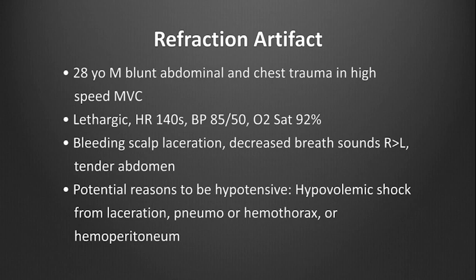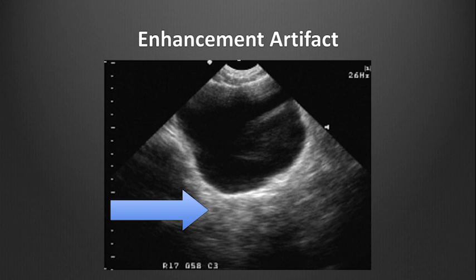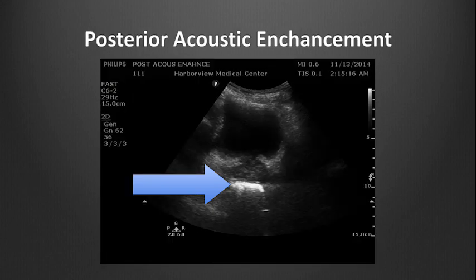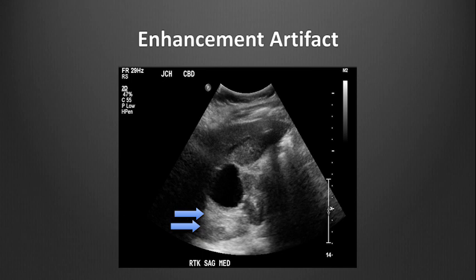You decide to perform a FAST exam — focused assessment with sonography in trauma — to search for hemoperitoneum. While viewing the bladder in the pelvis, you realize that the gain, or brightness, of the tissue on the screen deep to the bladder is very high. This enhancement artifact, or excessive brightness deep to the bladder, occurs when the ultrasound waves travel very quickly through a fluid-filled structure such as the bladder, and the ultrasound machine is fooled into thinking that deeper structures should be brighter. When performing a FAST exam, it is important to turn down the far or deep gain to discern free fluid deep to the bladder that might be missed if obscured by enhancement artifact. The next image shows the same area with the gain reduced and better visualization of the underlying tissue. Acoustic enhancement also creates an artificially hyperechoic or bright appearance of tissue deep to a fluid-filled structure such as a renal cyst.